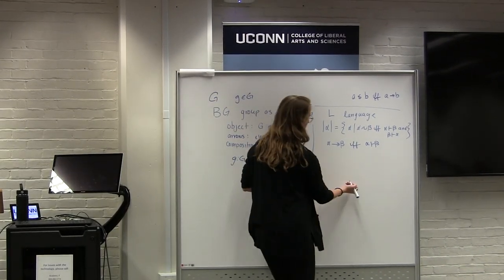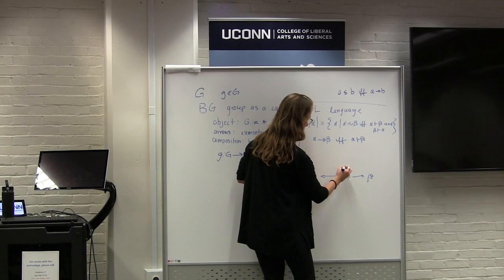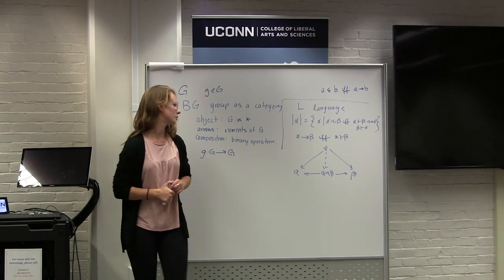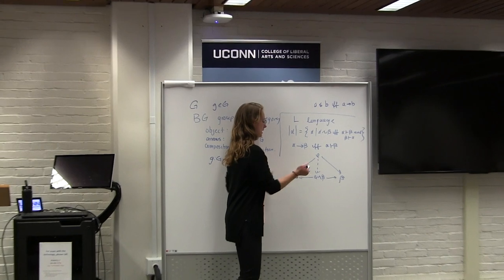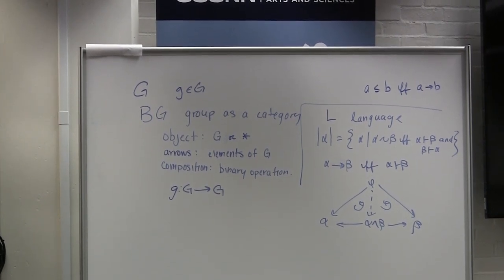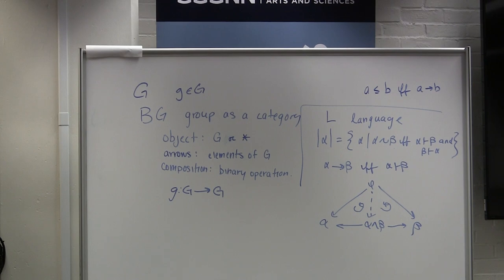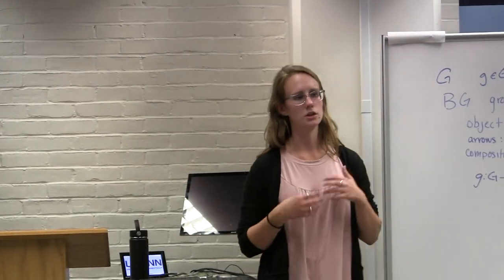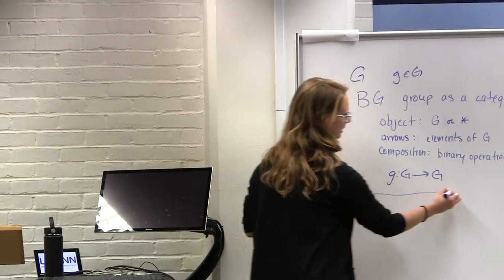In this category, the product turns out to be conjunction. So for any equivalence classes of formulas α and β, the product is the object that makes the universal diagram commute for any choice of φ. What's important is that the product just is conjunction in this case. This is interesting because it tells us there's a significant structural similarity between conjunction and the Cartesian product of sets.